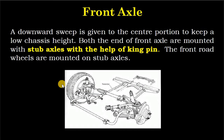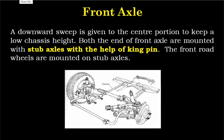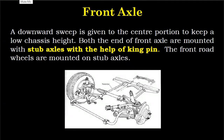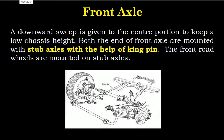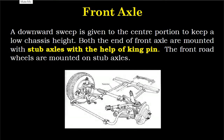A downward sweep is given to the central portion to keep a low chassis height. Both ends of the front axle are mounted with stub axles with the help of a kingpin. The front road wheels are mounted on the stub axle.